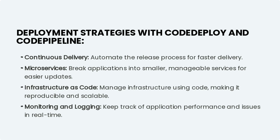Automate the release process for faster delivery. Microservices break applications into smaller, manageable services for easier updates. Infrastructure as code lets you manage infrastructure using code, making it reproducible and scalable. Monitoring and logging: keep track of application performance and issues in real-time.